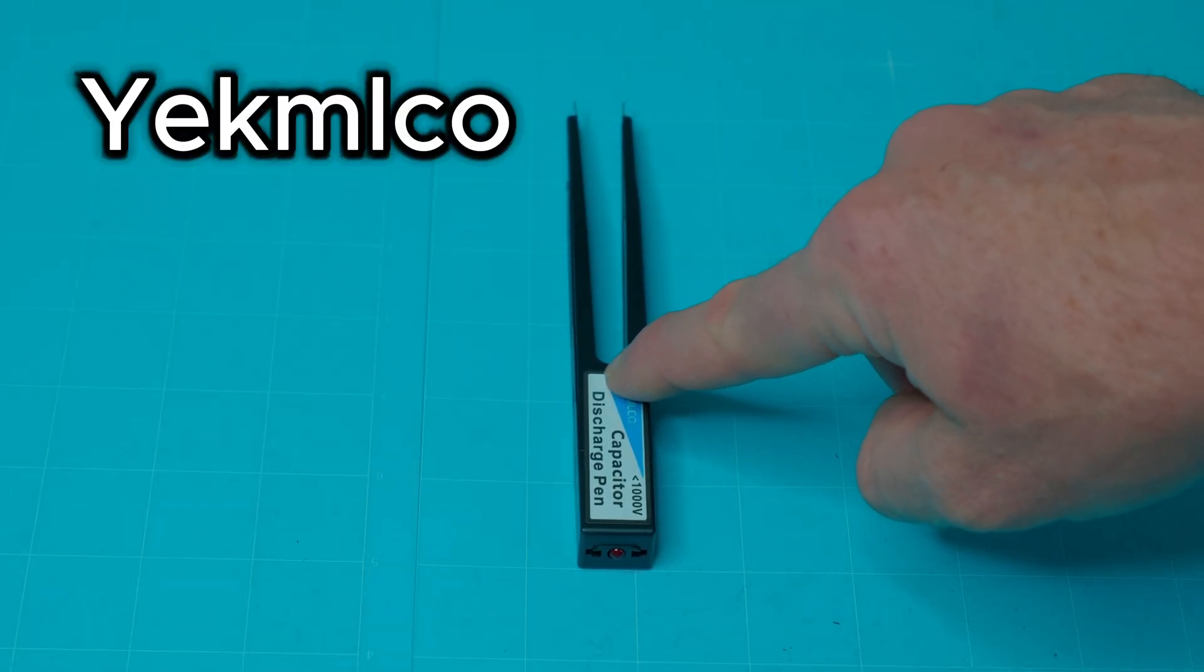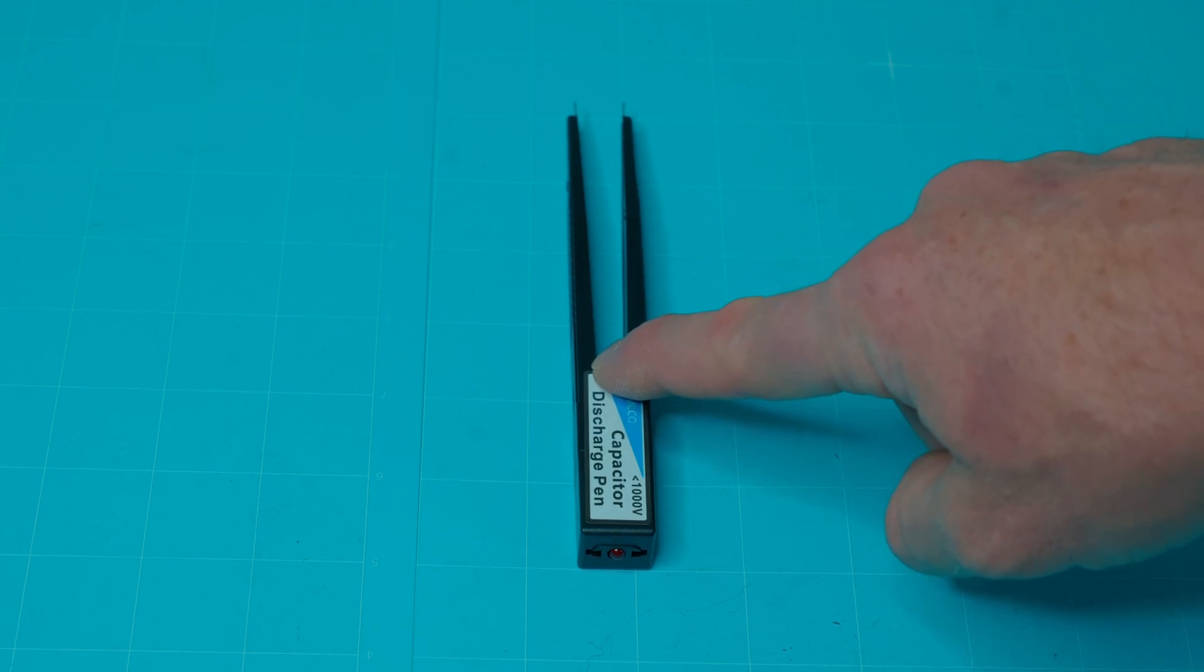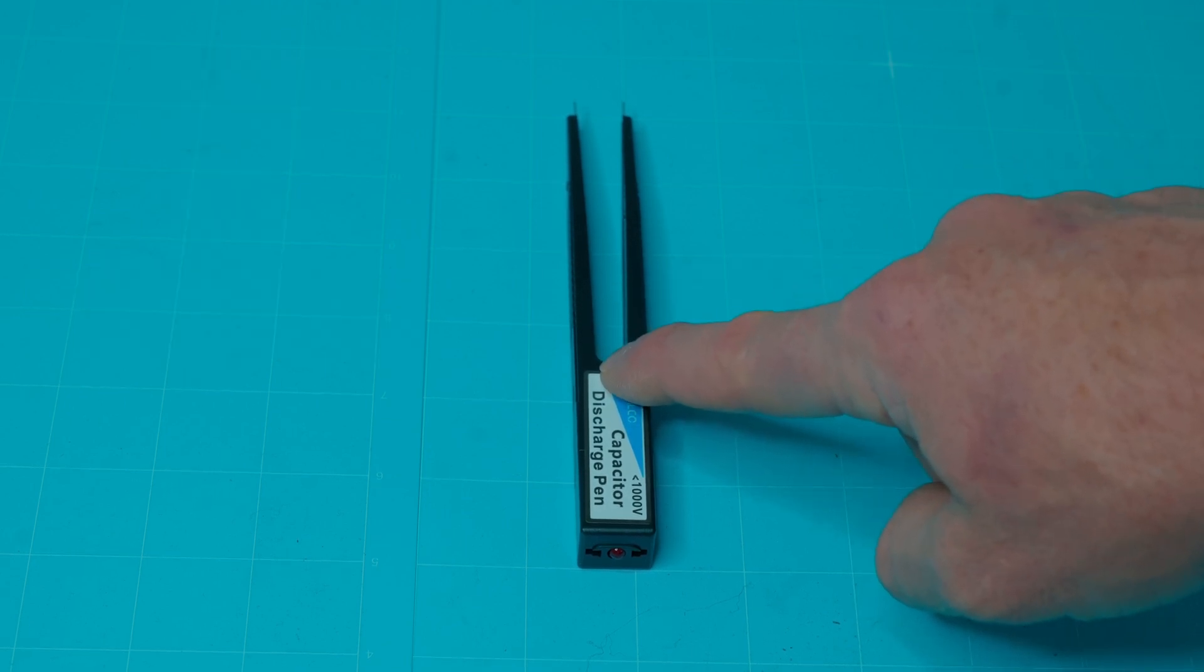I also have my Yuckelo discharge capacitor tweezers here. This will also discharge between 10 and 1,000 volts on the capacitor, so it can handle a lot as well.